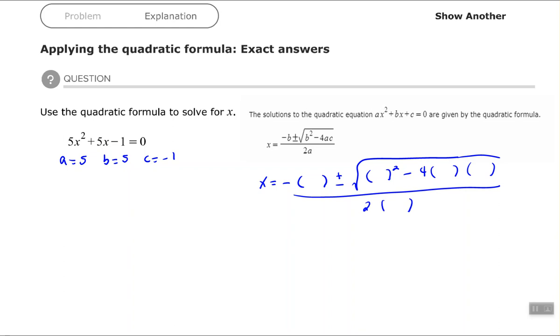So replace the b right here. So we have 5, and then we have 5 again. And then we have 4 times a times c. a is 5, c is equal to -1, all over 2 times a. Again, a is 5. And then from there, we just calculate.